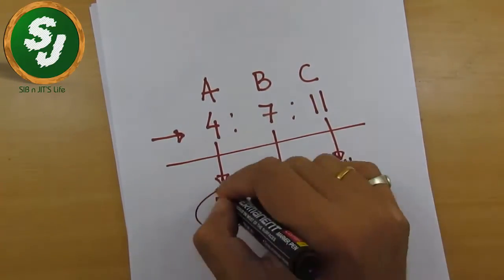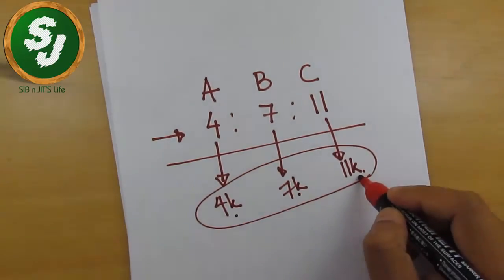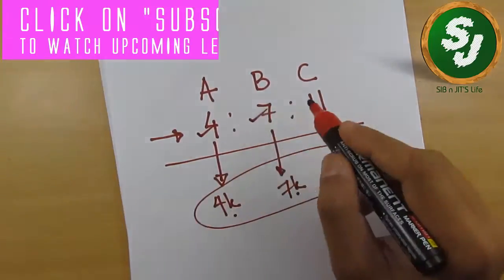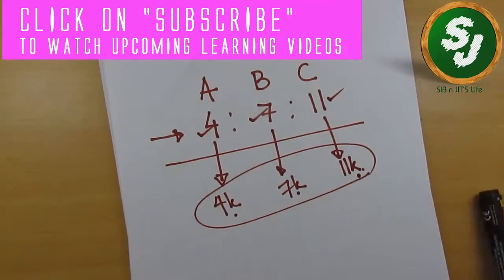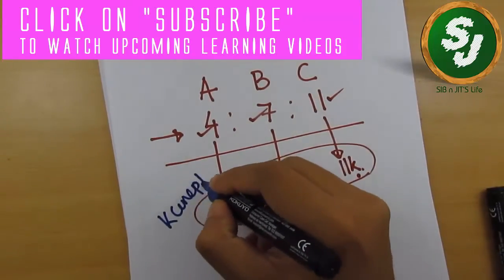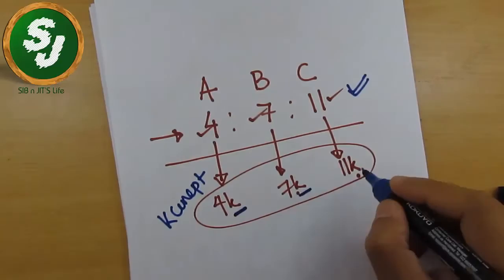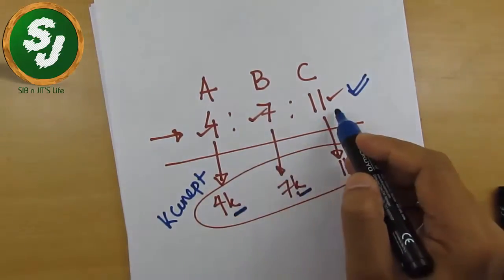This is the amount of money, real money they have is 4K, 7K, and 11K. But the ratio is 4 is to 7 is to 11. So this is K concept. K concept says that if ratio is given, just multiply a common constant, which is K, with every ratio numbers, and it will give you the real value.